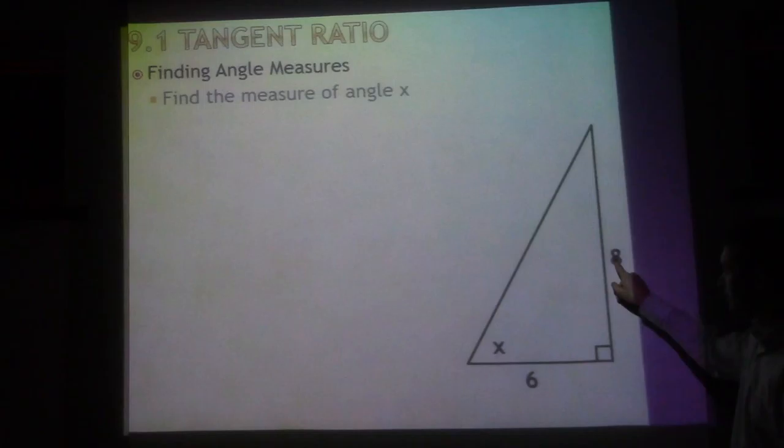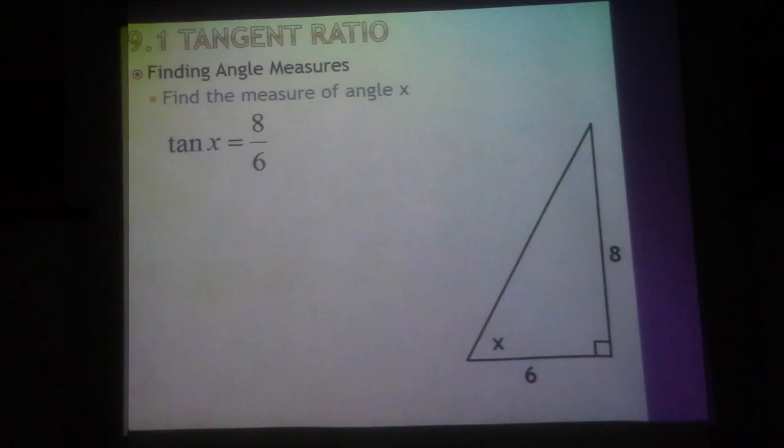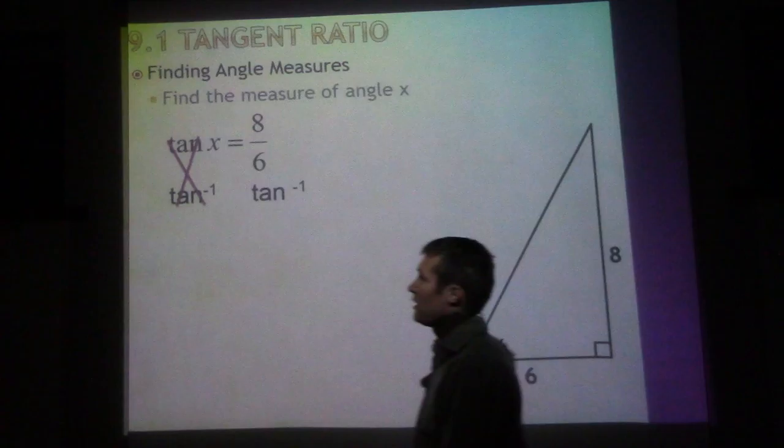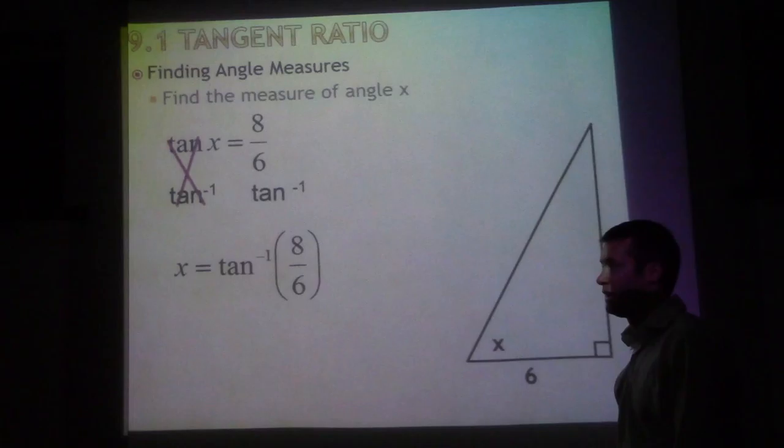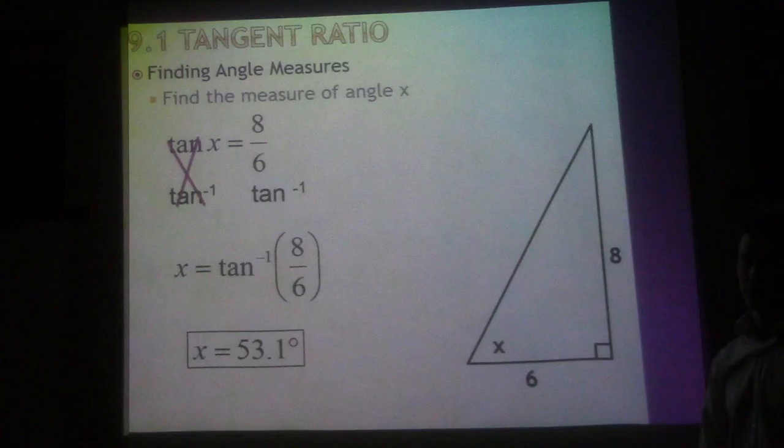We want to find the measurement of angle X. Tangent of angle X equals opposite over adjacent. We want to get rid of tangent, so we do the tangent inverse to both sides. When you do that, it cancels off, and we're left with X equals the tangent inverse of 8 over 6, or 4 over 3. Type that into your calculator and you get about 53.1 degrees. That angle is 53.1.